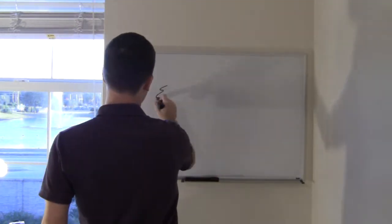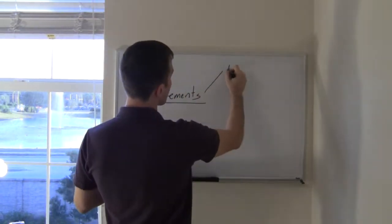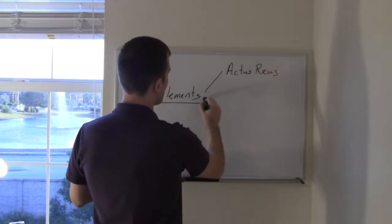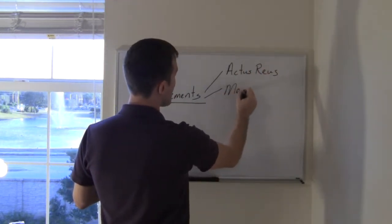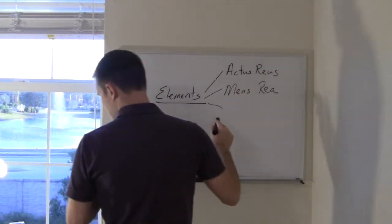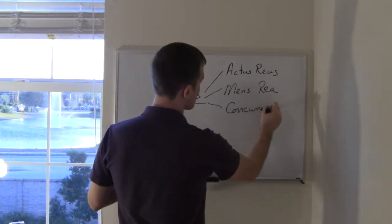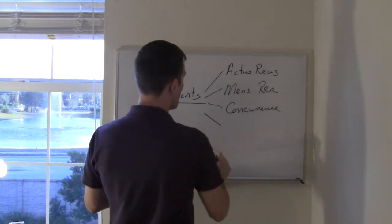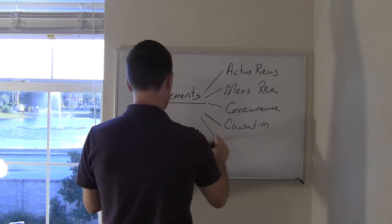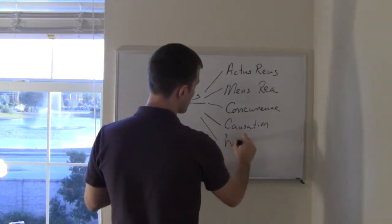So we have the actus reus, we have the mens rea, we have the concurrence, and I'll explain these in a second. We have causation and we have the harm, the criminal harm.